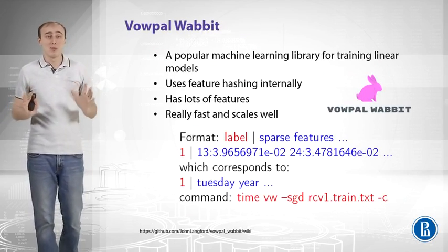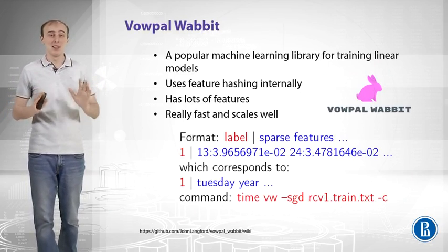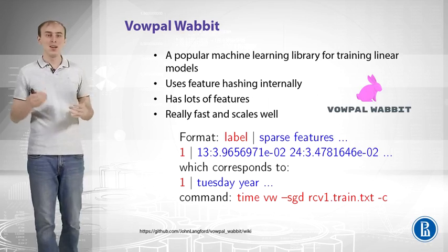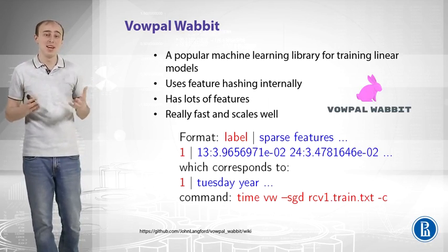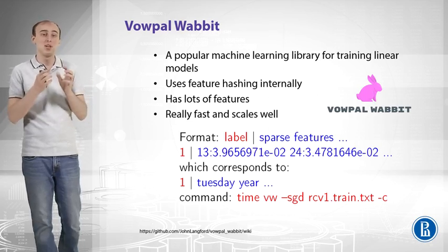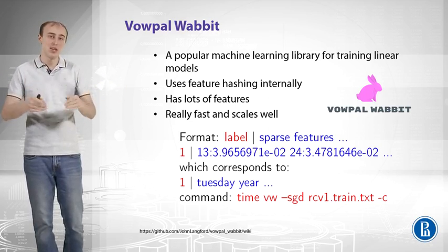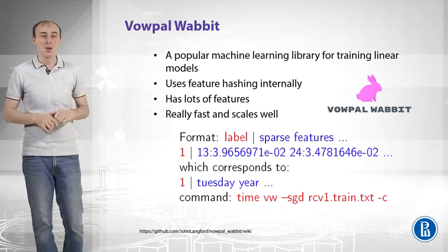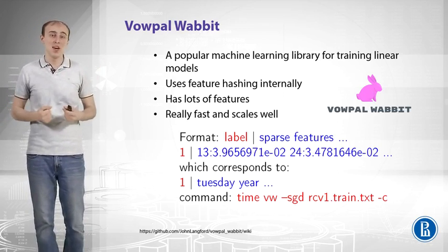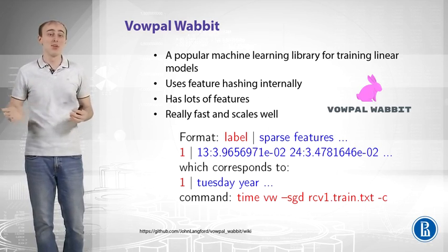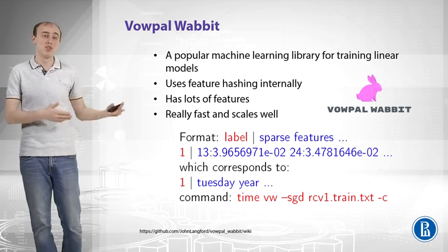Finally, let's overview the Vowpal Wabbit library. It is a well-known machine learning library for training linear models, and it uses the feature hashing we described internally. It has many features, is very fast, and scales well. As input you can give raw text and it will tokenize on whitespace, compute a hash value for each token, and use those hash values for hash vectorization. You can also pass pre-computed features directly by specifying a column number and a real-valued number, meaning that column corresponding to hash value 13 will have that value.